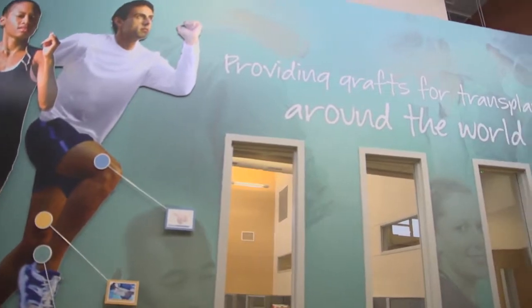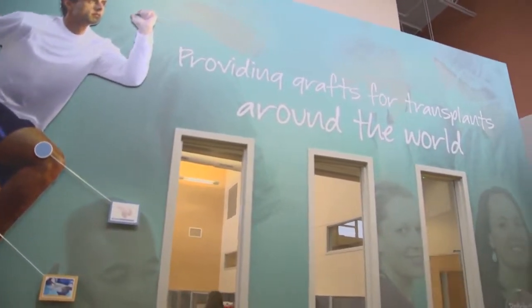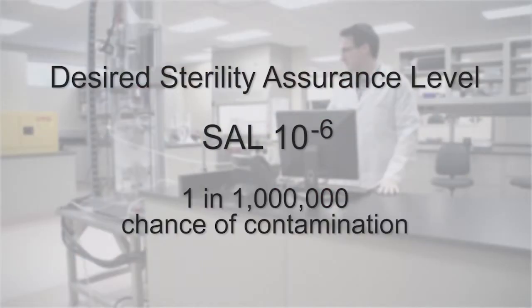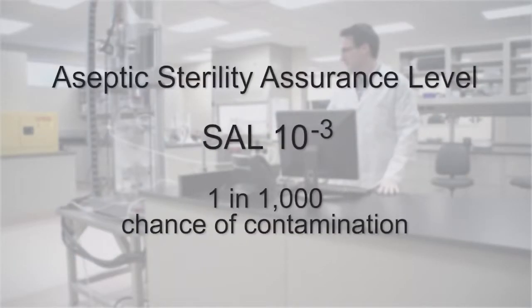Surgeons are migrating away from gamma irradiated grafts, and at the time the only viable alternative for them was aseptic tissue. But aseptic tissue is not sterile to SAL 10 to the minus 6. It's only SAL 10 to the minus 3.